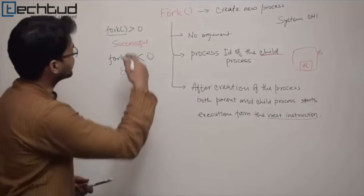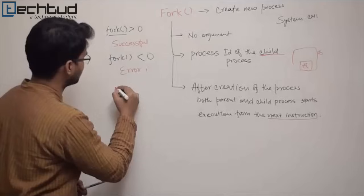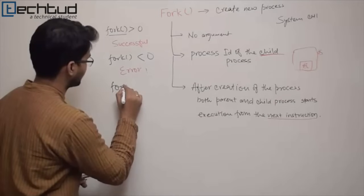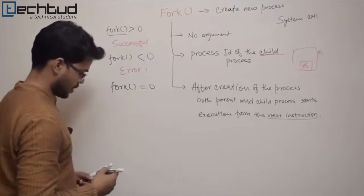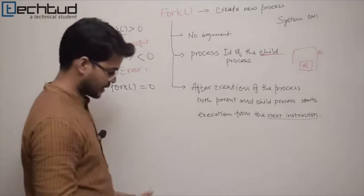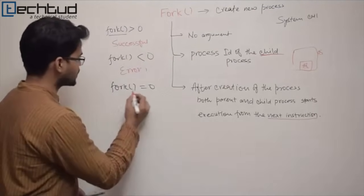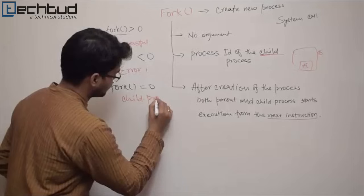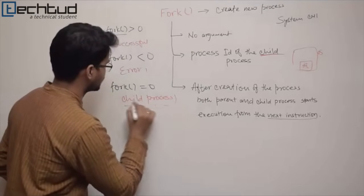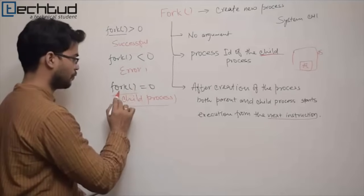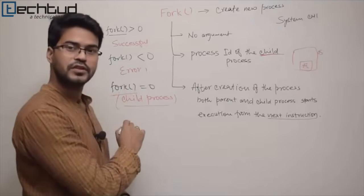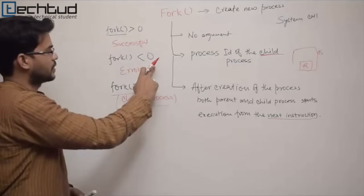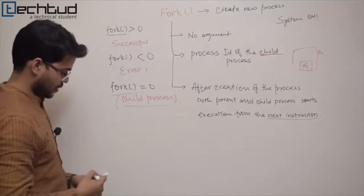When the value of fork equals zero, it means it is the child process. So fork returns zero to the child process, greater than zero to the parent process, and a negative value if the fork fails.